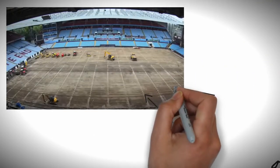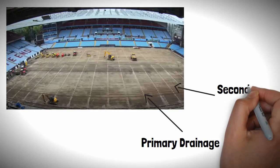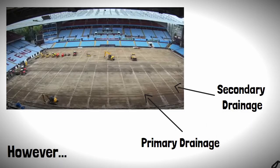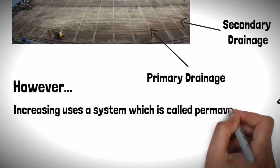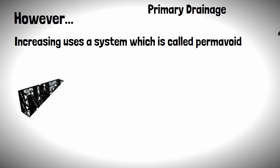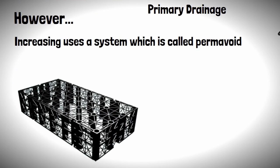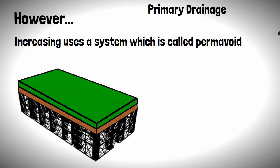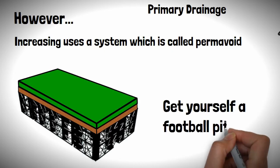These two drainage methods described are the main methods for draining pitches. However, there is an increasing use of a system which is called permavoid. These are essentially plastic crates which are combined together and sports turf is whacked on top to get yourself a football pitch.